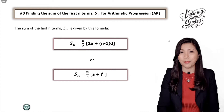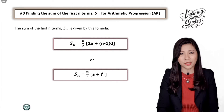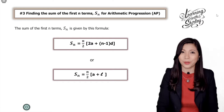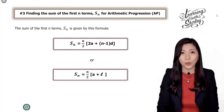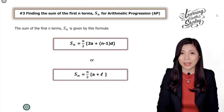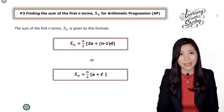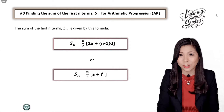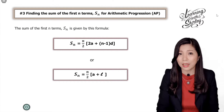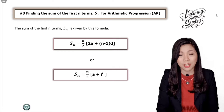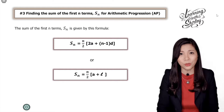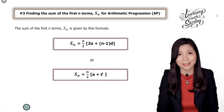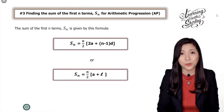To find the sum of the first n terms of arithmetic progressions, we use this formula. Sn equals to n over 2 bracket (2a plus (n minus 1) d) if n, a and d are given. But if the last term is given, we use Sn equals to n over 2 bracket (a plus l). Remember these two formulas.